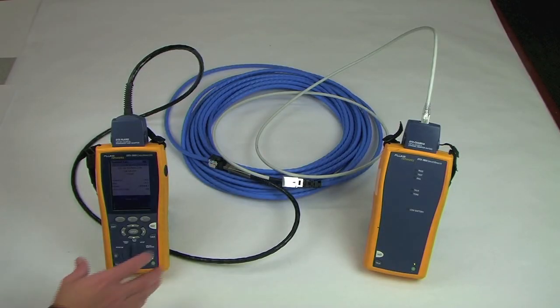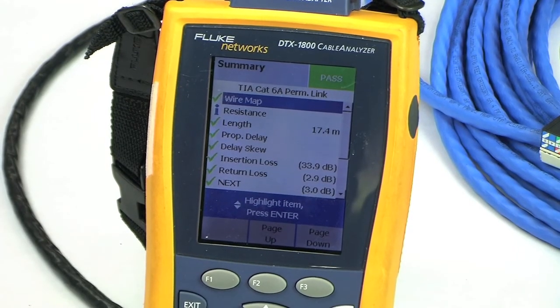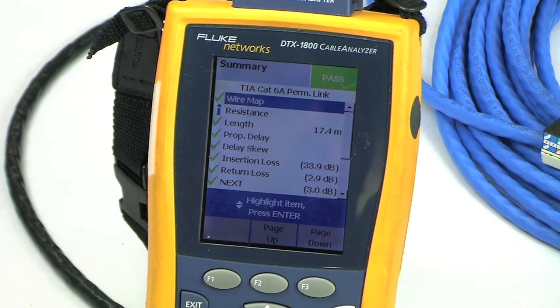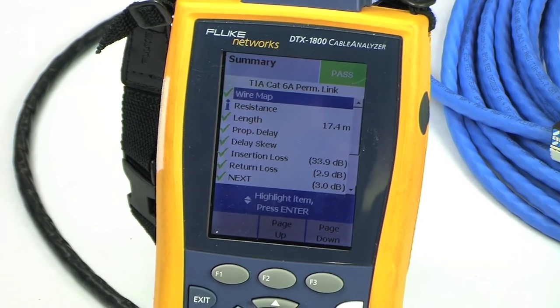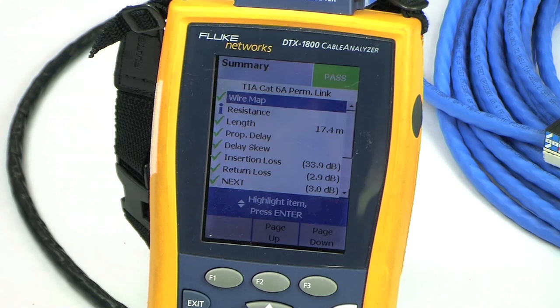Once the connections are made, we'll press the test button and wait for the results. As you can see, the link passes all of the Category 6A test requirements using the OCC field-plug test adapter.